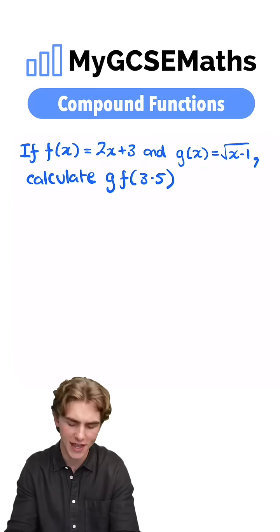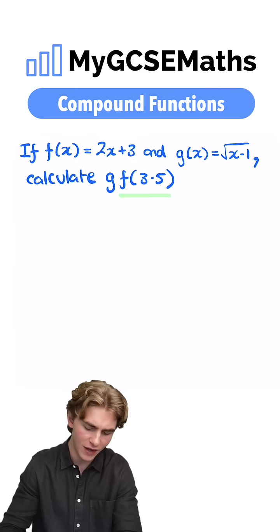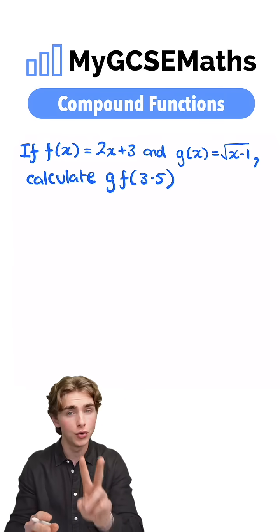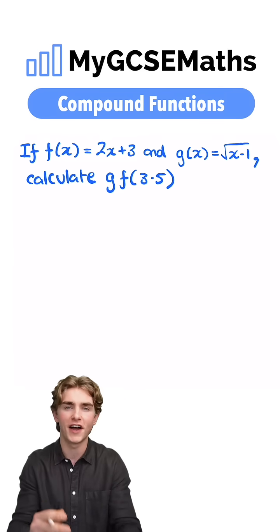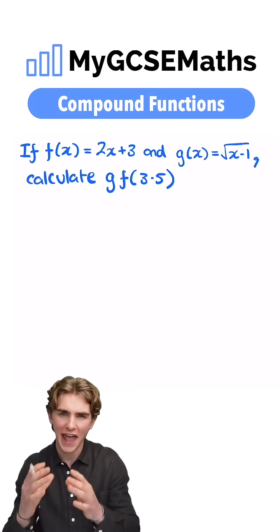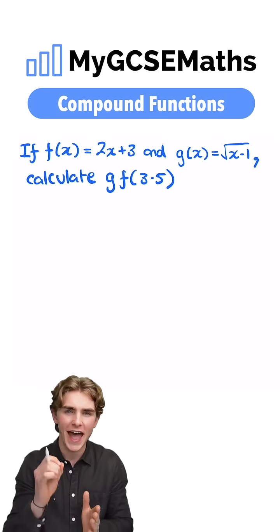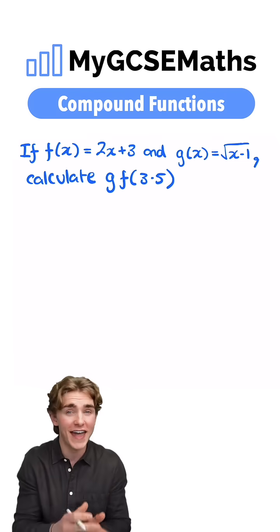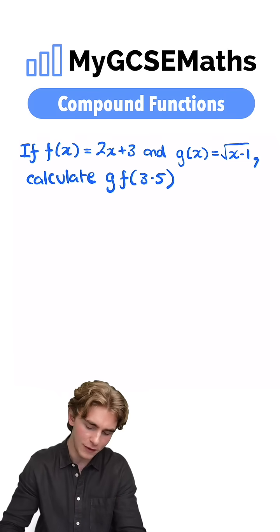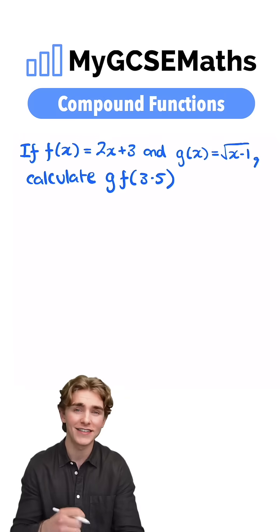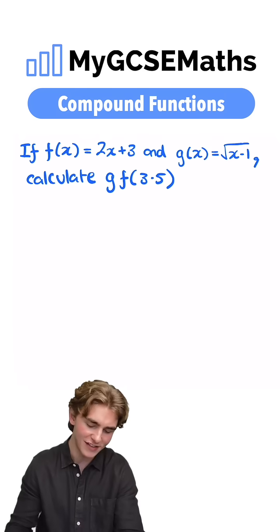We've got a compound function here because we have f(3.5) and we're putting that into g. There are two ways of doing this. One way would be to find g(f(x)) by putting f(x) into g(x) and then plugging in 3.5, or we can find f(3.5) and then plug that into g. We're going to do the second one because it's easier.